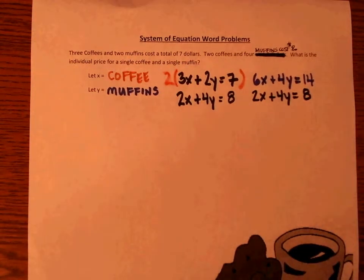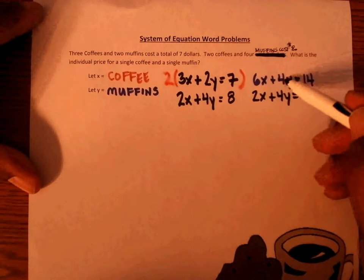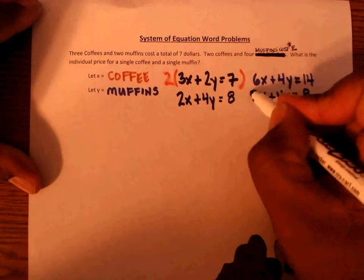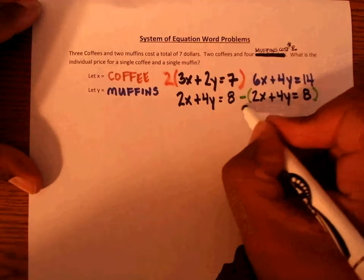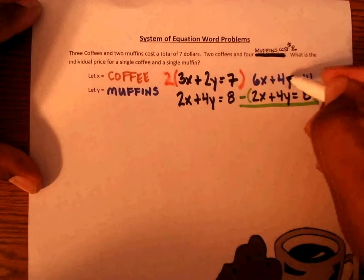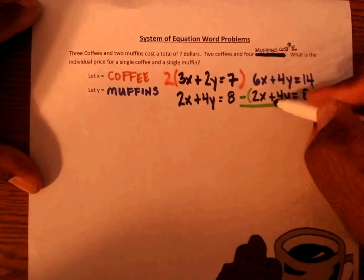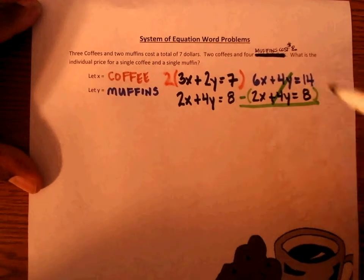From here, since the fours match exactly, we would subtract the second equation so that 4 minus 4 will cancel out our Y values.